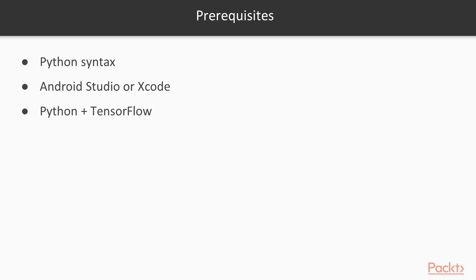Since this course will use Python as the main programming language, it is very important that you can understand its syntax, so some experience in Python is required. We also need to have Python and TensorFlow installed. I used TensorFlow 1.4.1 and Python 2.7, but probably other versions would be fine as well. Since this is oriented to deploying models in a mobile device, it is important you know how to program for Android or iOS. I mainly use Java for Android, but the code is explained in a simple and commented way so that you can rewrite it in other languages easily. Therefore, you will need Android Studio or Xcode.